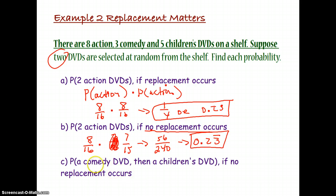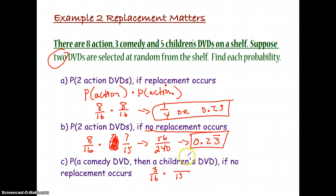For part C: the probability of selecting a comedy DVD then a children's DVD, with no replacement. The first selection is a comedy DVD: 3 out of 16. We hold that out, so now we have 15 to choose from. We want a children's DVD next — there are still 5 children's DVDs, so that's 5/15. We multiply 3/16 times 5/15 to get 15/240, giving a probability of 0.0625.